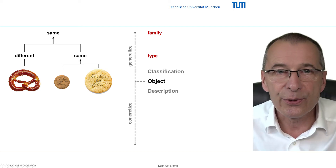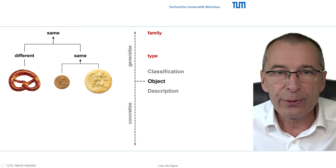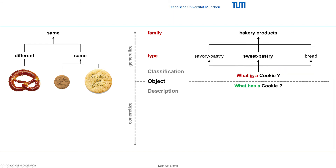Please note: at each generalization step we group objects based on common attributes and thus distinguish between groups with different attributes, and we abstract from specific objects. In Six Sigma projects we search for characteristic information about specific objects. This information is provided by their attributes, like the ingredients, form, taste, and texture of our cookies.